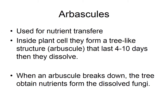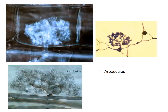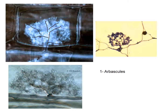As the arbuscule dissolves, it breaks down into nutrients that the plant cell can obtain from the fungus — this is another benefit, directly delivering nutrients to the cell. Looking at this under a microscope, you can see the borders of the plant cell. The dendritic tree-like structure extends with hyphae from outside, penetrating the root cell and forming these arbuscules inside. This structure only lasts four to ten days before it starts dissolving.